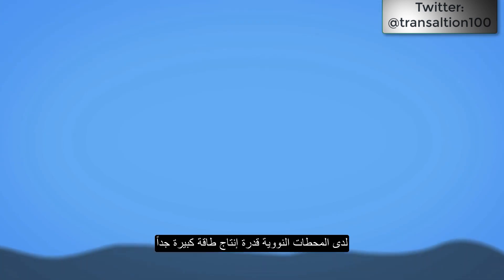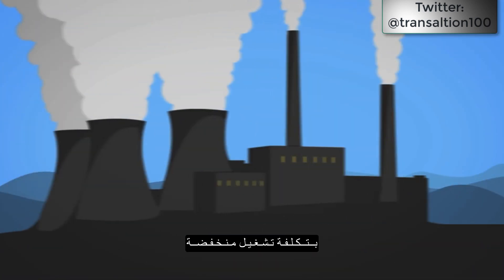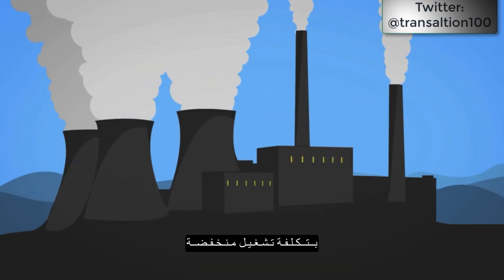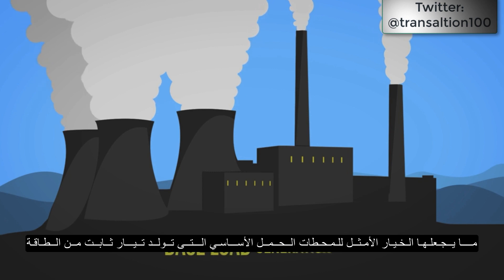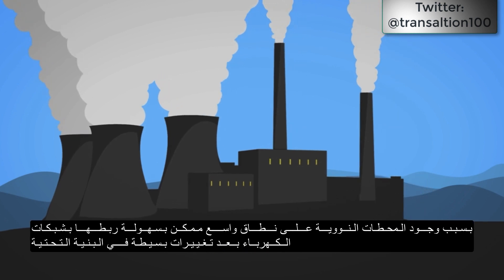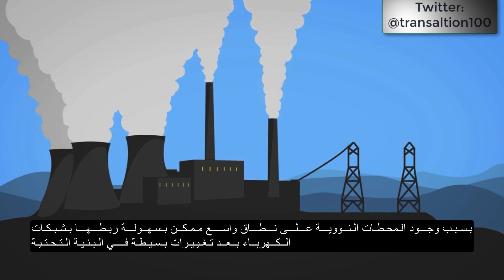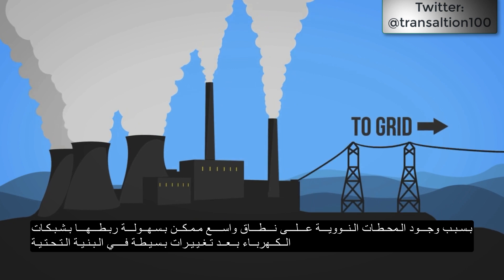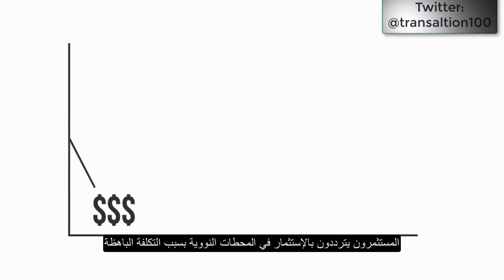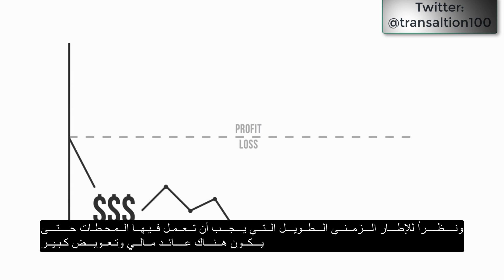Nuclear plants have large power generating capacity and low operating costs, making it ideal for base load generation. Because of its large scale and centralized nature, it can easily be integrated into electricity grids, requiring few changes to existing infrastructure. However, upfront capital costs are intensive and present financial risks to investors given the long time frames power plants must operate to recover these costs.